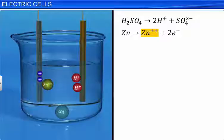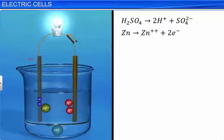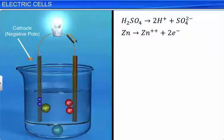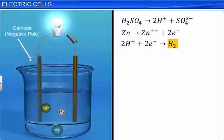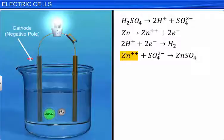The zinc rod is now negatively charged, as the electrons obtained by the ionization of zinc atoms remain on the rod. Thus, it acts as the cathode or the negative pole of the cell. The two electrons flow into the external circuit, causing electric current to flow. The electrons passing through the external circuit reach the copper rod, where they combine with the hydrogen ions on the rod and form hydrogen molecules. The negative sulfate ions in the solution combine with positive zinc ions to form zinc sulfate molecules. Since electrons are removed from the copper rod, it turns positively charged, and thus acts as the anode or the positive pole of the cell.